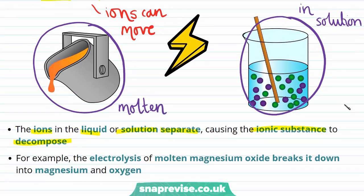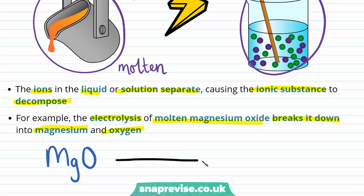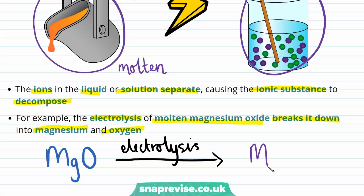As an example, the electrolysis of molten or melted magnesium oxide will break it down in order to form magnesium and oxygen. Magnesium oxide is an ionic compound made up of a metal and a non-metal, which has the chemical symbol MgO. The electrolysis process can be used in order to break down magnesium oxide, forming magnesium metal and oxygen, which as always will be formed as a diatomic molecule.